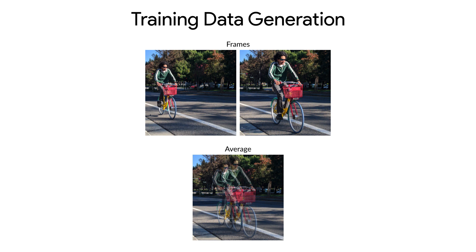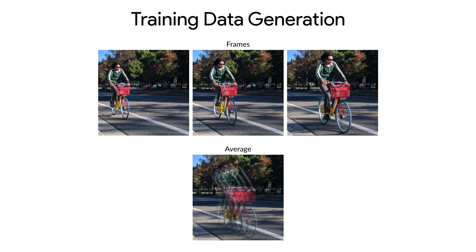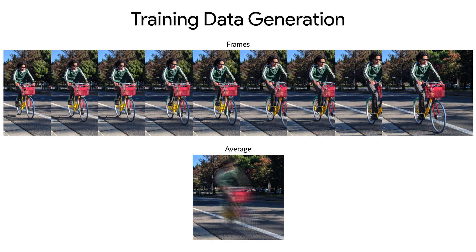One of the biggest challenges of this project was getting sufficient training data. Capturing actual motion blurred images with sharp image pairs would be really difficult and expensive. So instead, we leveraged the vast numbers of YouTube videos to generate data. We first train a frame interpolation neural network, which predicts the middle frame given two inputs. We then use the frame interpolation neural network to generate pseudo-ground truth motion blurred images by recursively interpolating frames to fill in the gaps in time, then averaging all of the interpolated frames to produce realistic motion blur training data.